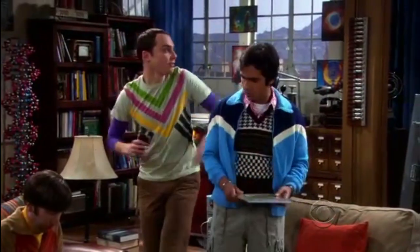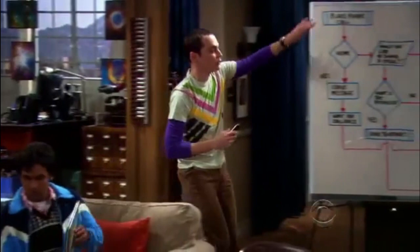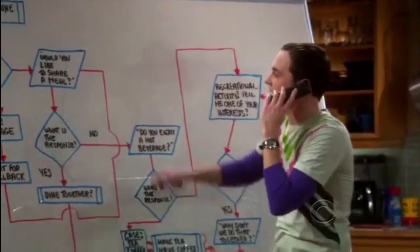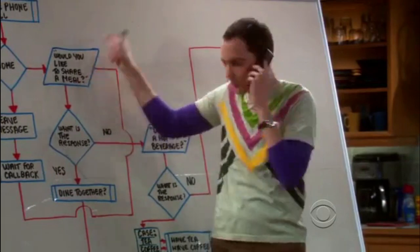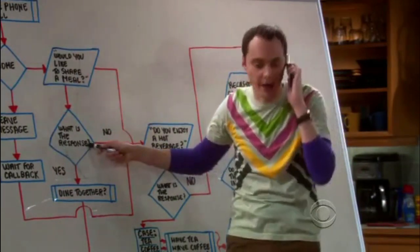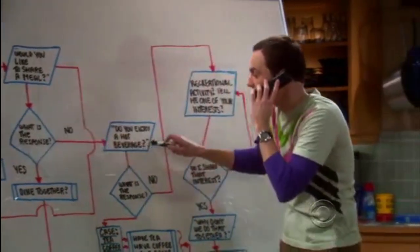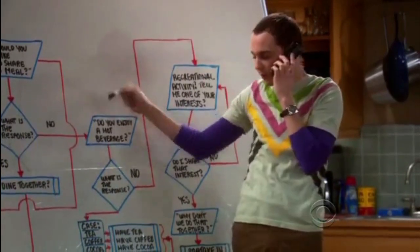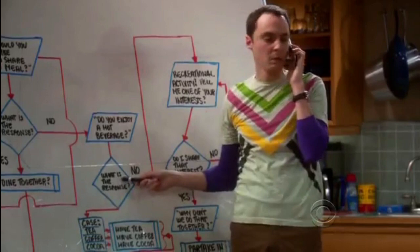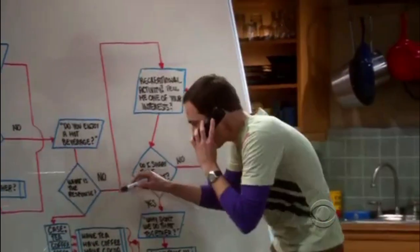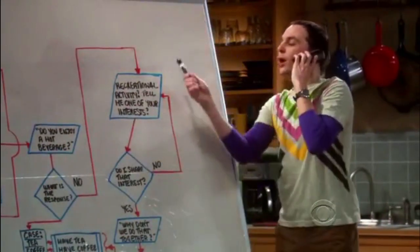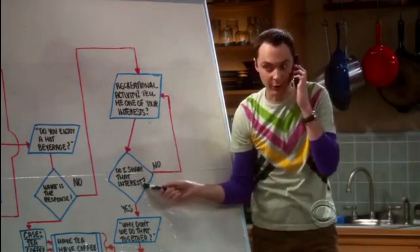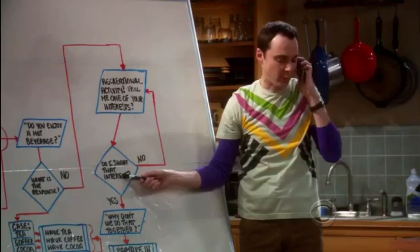I've distilled its essence into a simple flowchart that will guide me through the process. Perhaps the two of us might share a meal together. Well then perhaps you'd have time for a hot beverage — popular choices include tea, coffee, cocoa. What about a recreational activity? I bet we share some common interests. Tell me an interest of yours.